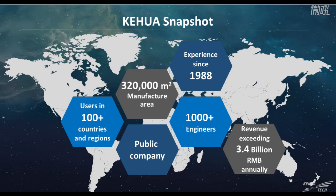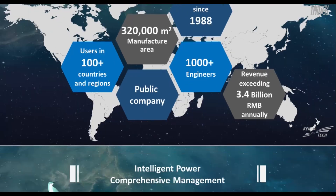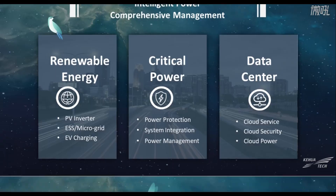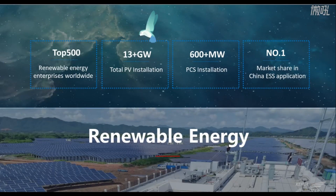R&D is a core capability with more than 1,000 engineers serving users from over 100 countries and regions. Our company promotes the strategy of intelligent power comprehensive management, under which we've developed three main business sections: renewable energy, critical power, and data center. Renewable energy is a fast-growing business around the world, and Keihua is one of the global top 500 companies in the field, with a total installation capacity of over 13 GigaWatts.